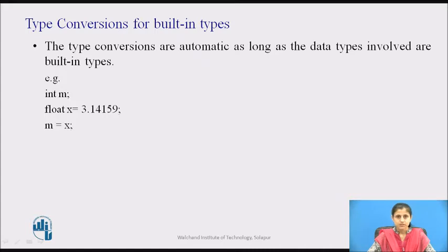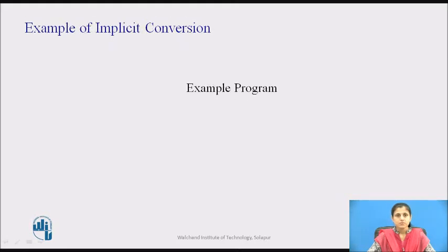For example, the statement: int m; float x = 3.14159; m = x; assigns an integer value to m and truncates the fractional part. Type conversions are automatic as long as the data types involved are built-in types. Let's see a program of implicit conversion.